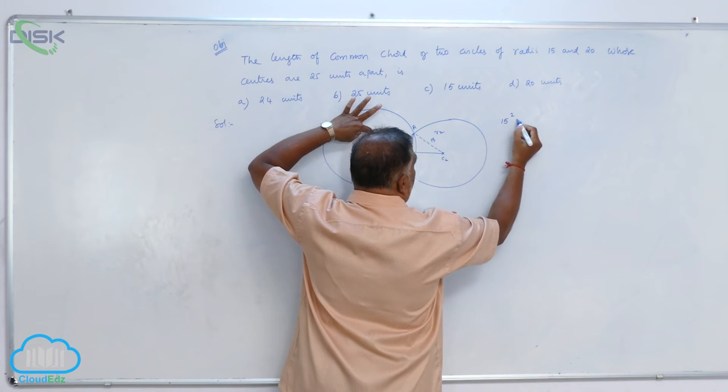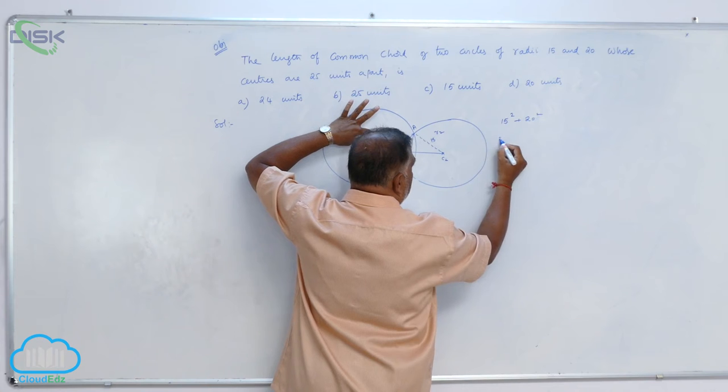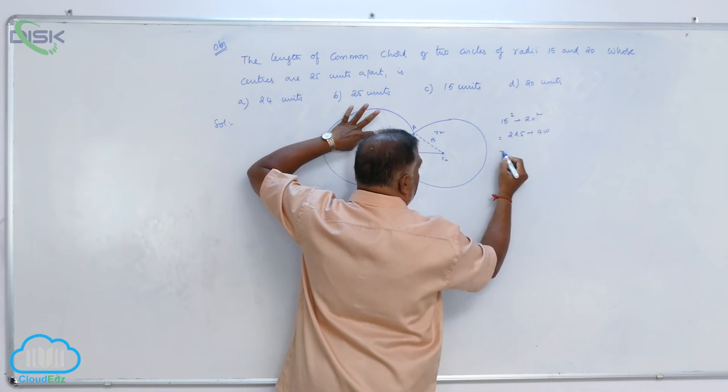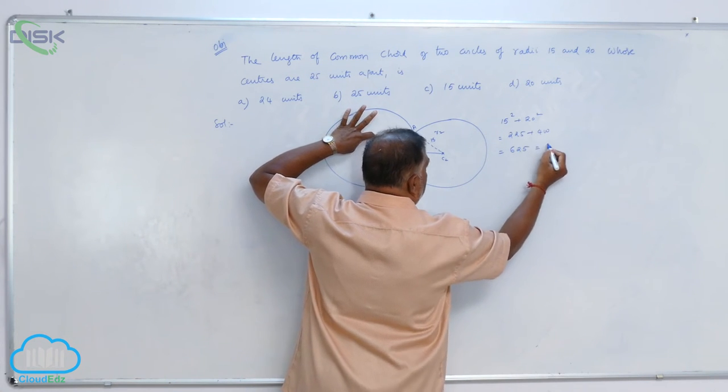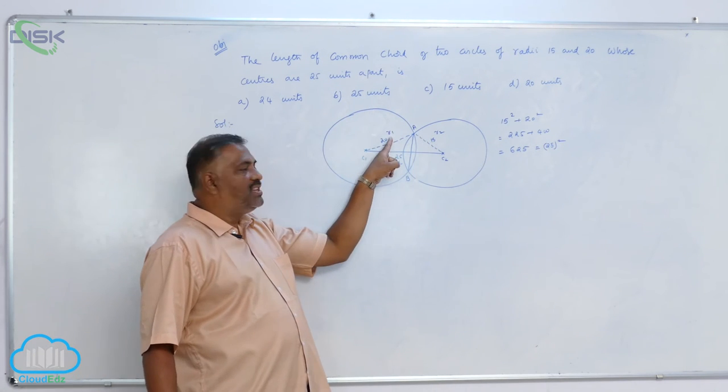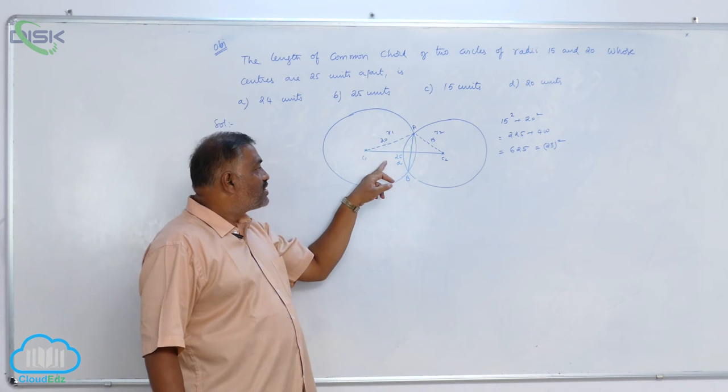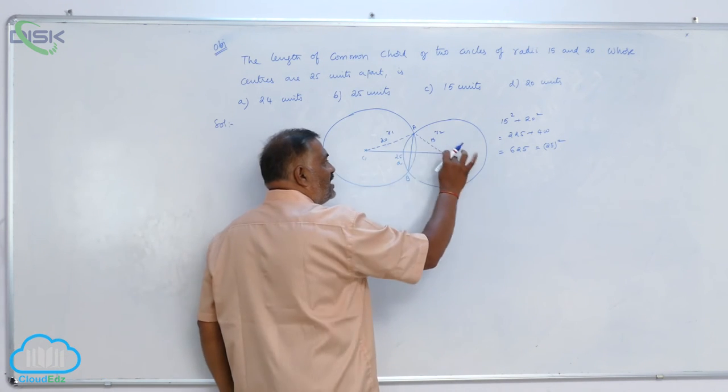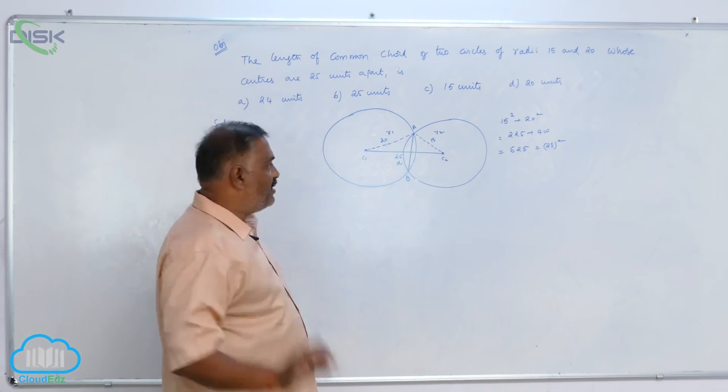15 square plus 20 square is equal to 225 plus 400, that is 625, that is 25 whole square. That means sum of the squares of these two sides is equal to square of the third side. That means this given triangle is a right angled triangle.